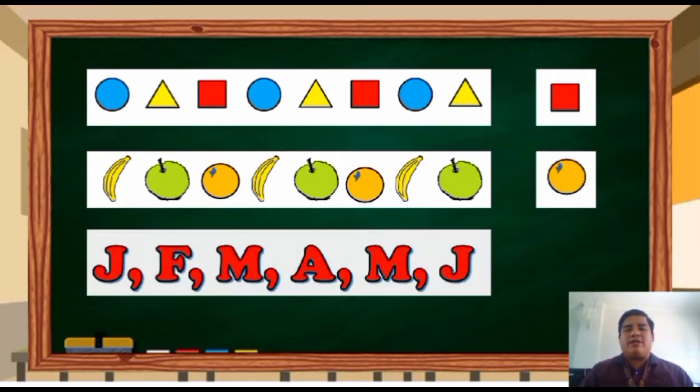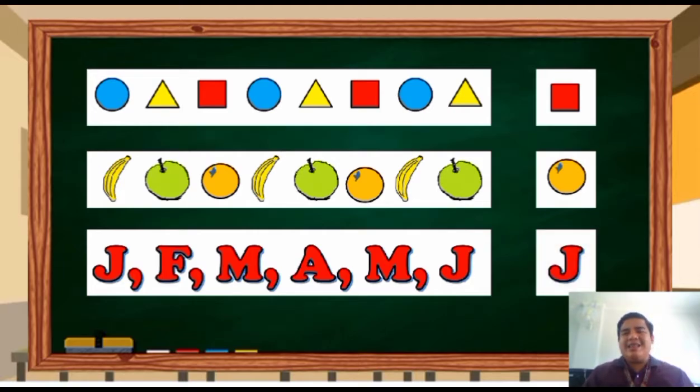What about in these letters? J, F, M, A, M, J. That is a pattern. But, what do you think is the next element? So, the next element is a letter J. How come that the next element is J? Because the pattern are the initial letters of the 12 months of the year. J for January, F for February, March, April, May, June. So, the next one is for July and that is a letter J.